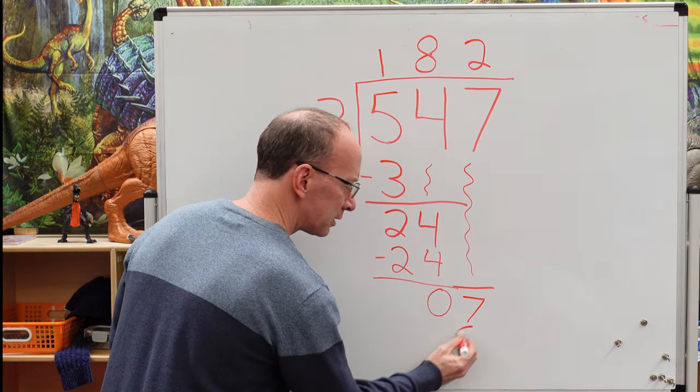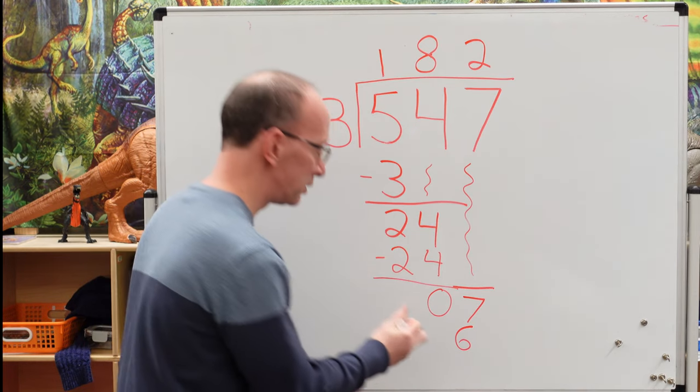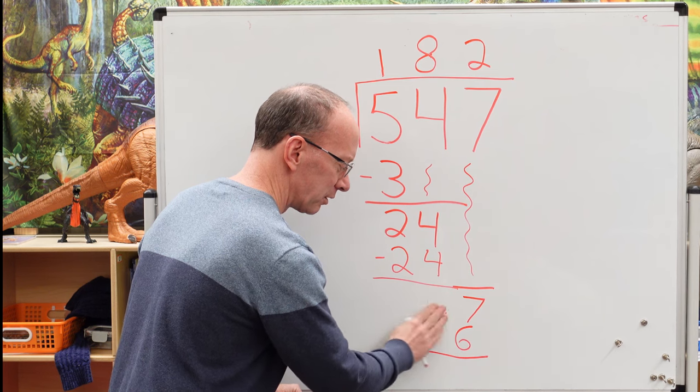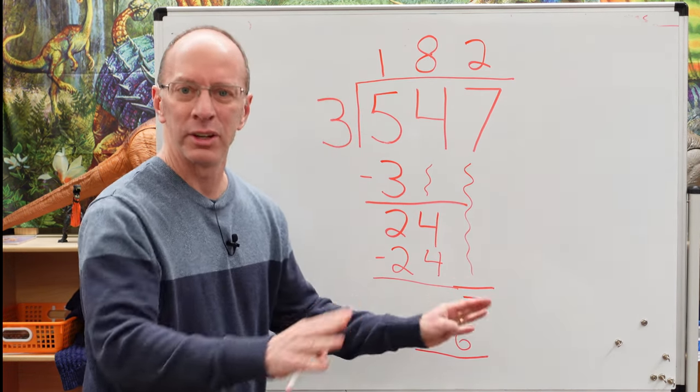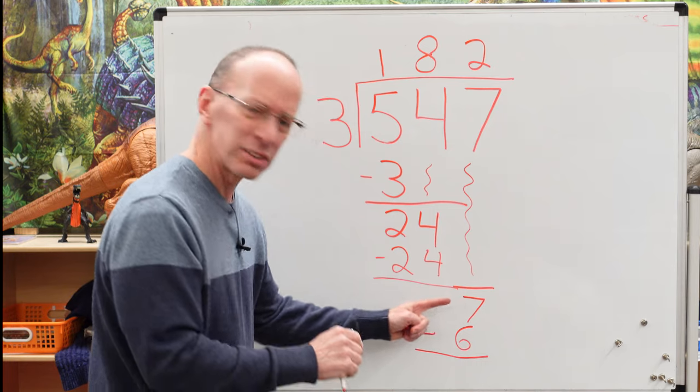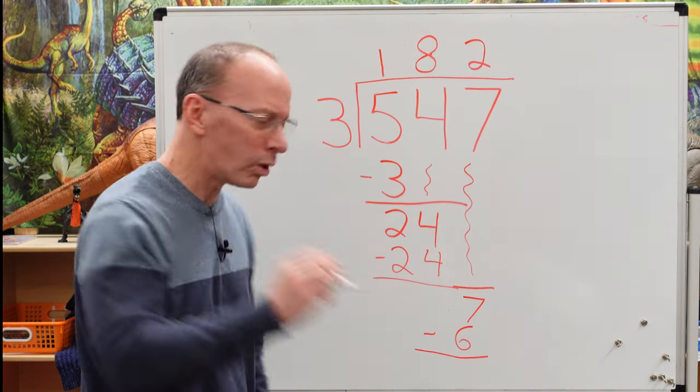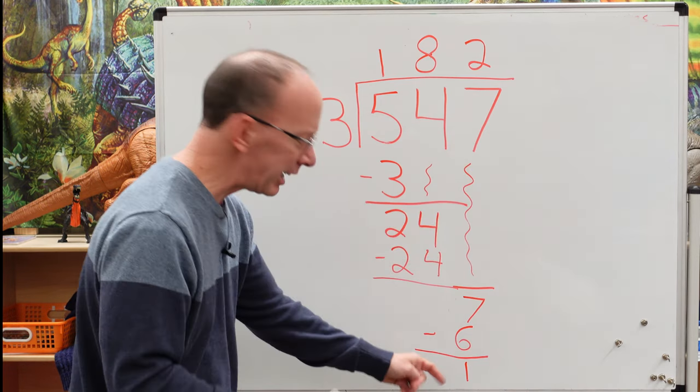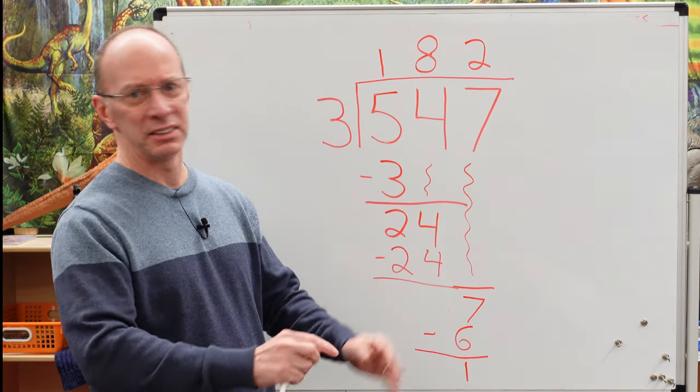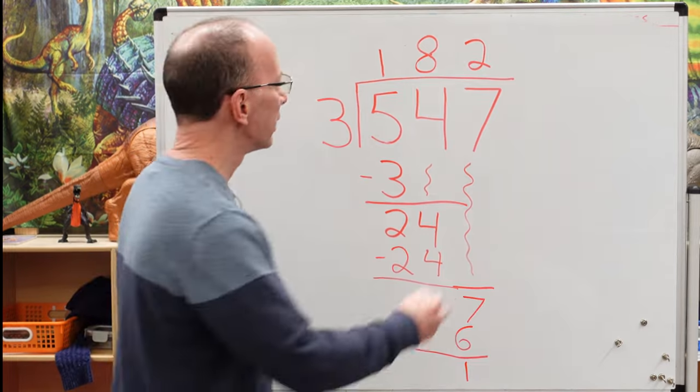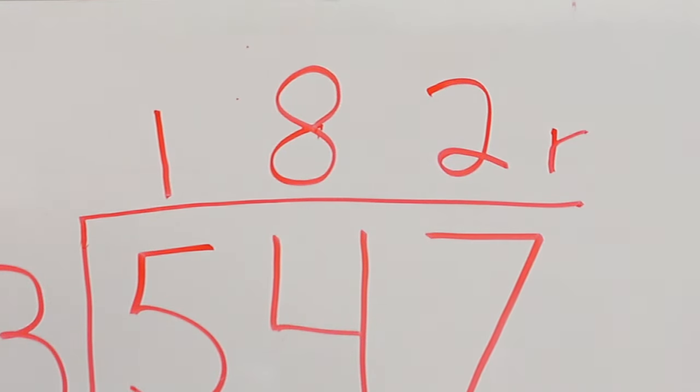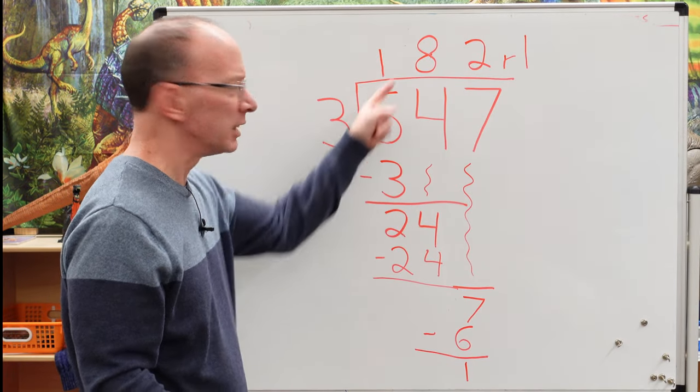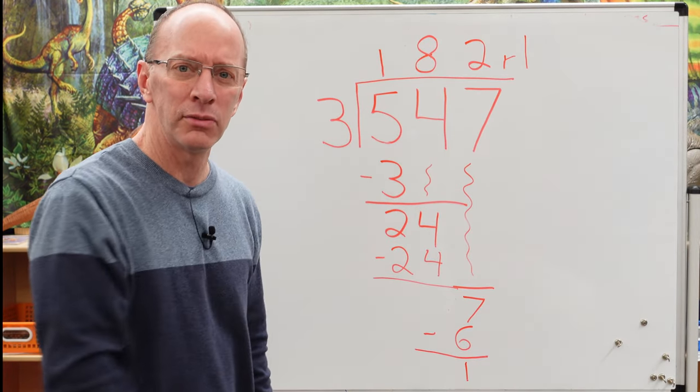2 times 3 equals 6. I'm running out of board space here. I'm going to get rid of that 0 there. It's nothing, it just gets a little confusing. So 7 minus 6 is 1. This number right here, because I don't have any more numbers to deal with, that is what is called remainder. You've just got something left over. You put an R right there with the 1. 547 divided by 3 is 182 with a remainder of 1.